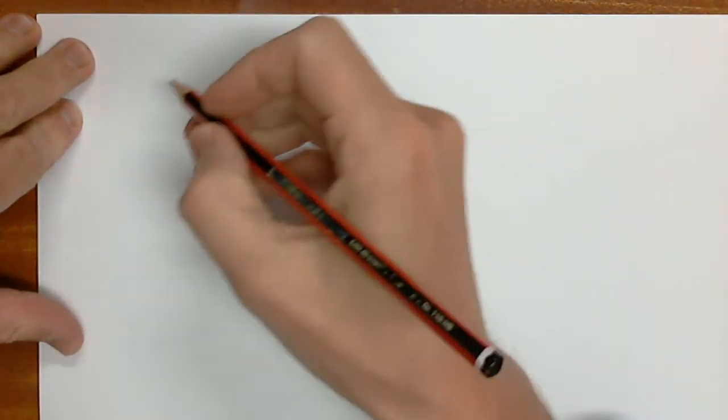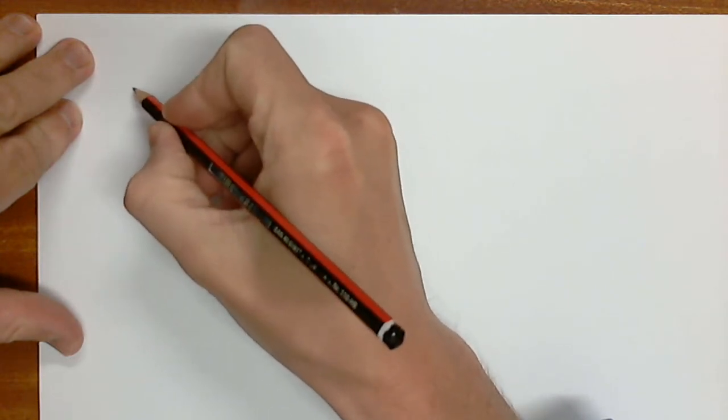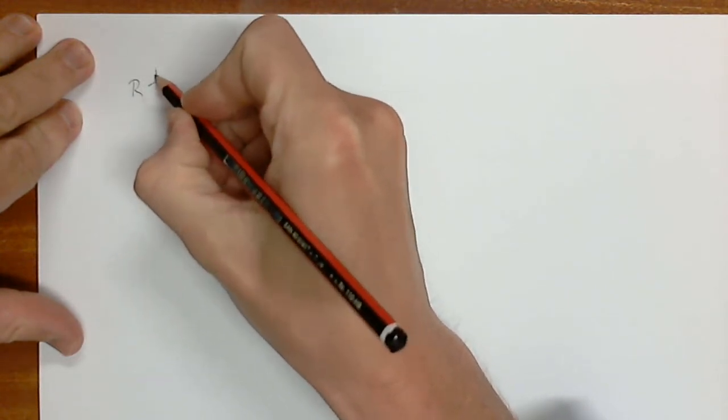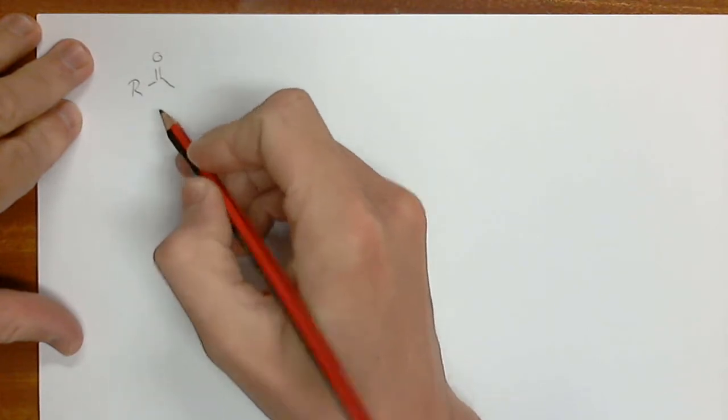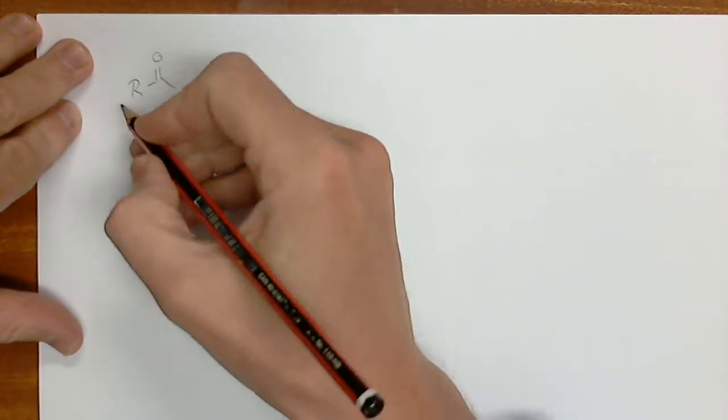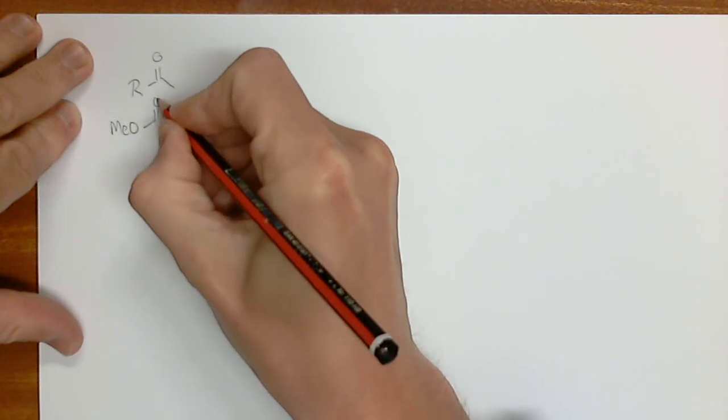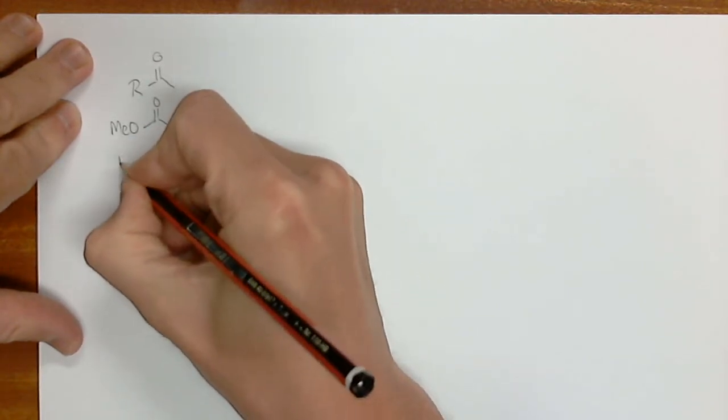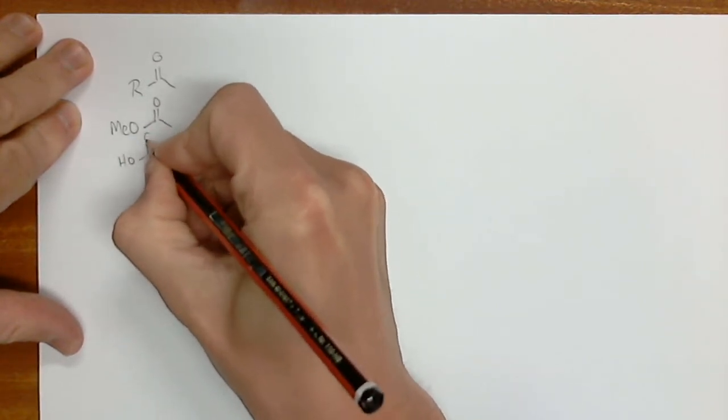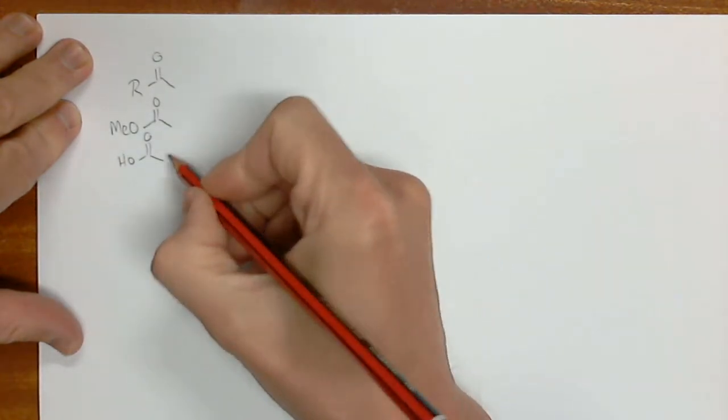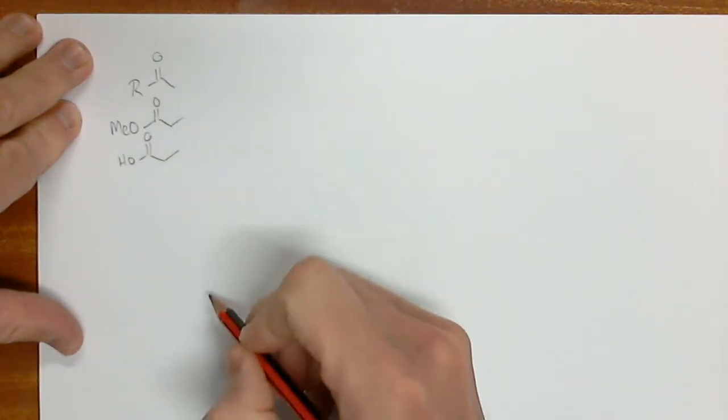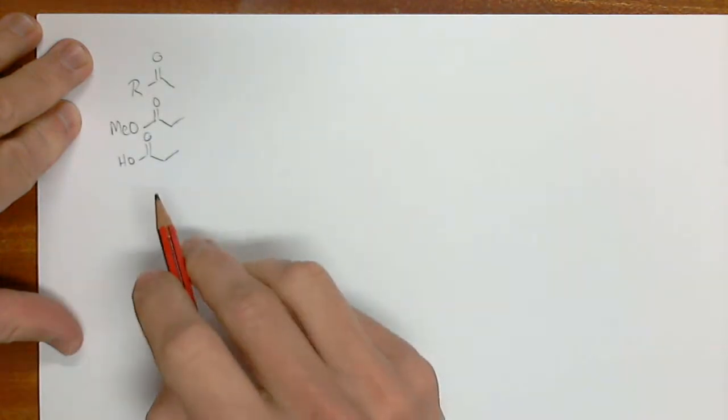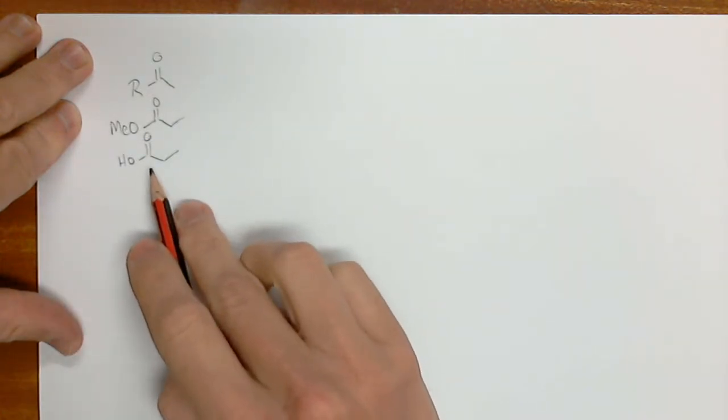All right, so this is Lecture 2 of our series. Just as a recap, we've looked at these different flavors of carbonyls. We've seen the ketone type where R is an alkyl group, the ester, and last class, the carboxylic acid. Now we need to do another one, which is the aldehyde.